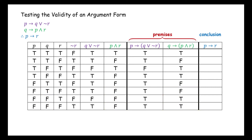To complete the truth table, we determine the truth values for the conclusion, if P, then R. So for the last column, we have: true, false, true, false, true, true, true, true, true.